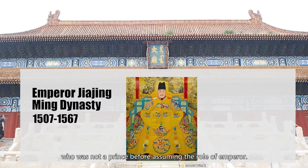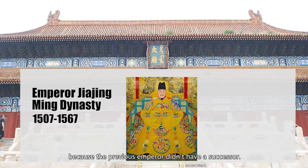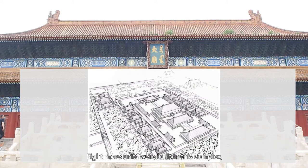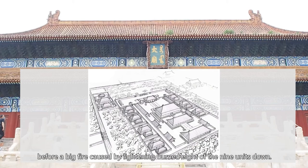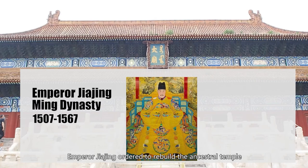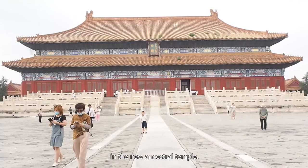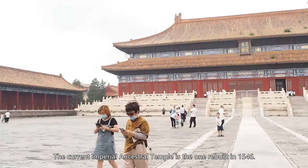In the Ming Dynasty, one son spent 24 years to get the memorial tablet of his father into the imperial ancestral temple. That was Emperor Jiajing, who was not a prince before assuming the role of emperor — he was chosen from the royal clan because the previous emperor didn't have a successor. In order to achieve his goal, he once changed the layout of the ancestral temple to that in the Rites of the Zhou Dynasty, building eight more individual units. But this layout only lasted six years before lightning caused a fire that burned down eight of the nine units. Emperor Jiajing ordered it rebuilt, and during this process his father successfully gained a position in the new ancestral temple. The current imperial ancestral temple is the one rebuilt in 1546.